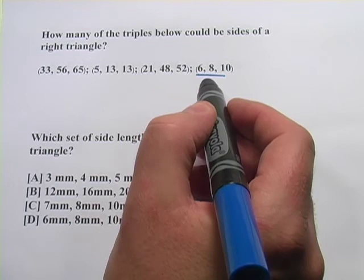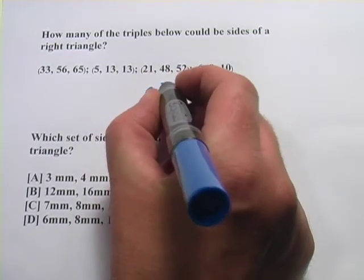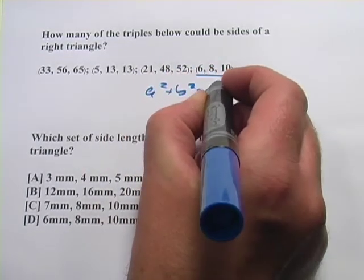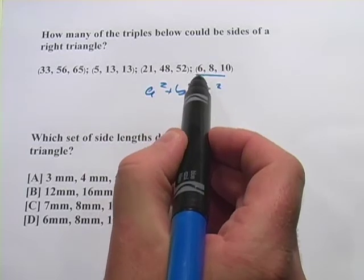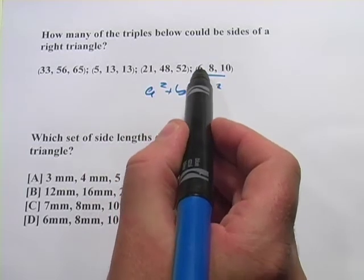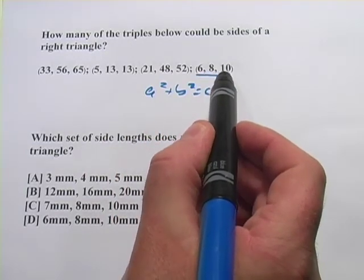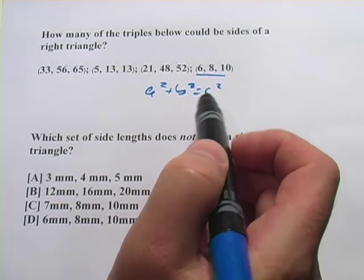If you wanted to double check that, you could use the Pythagorean theorem, a squared plus b squared equals c squared. 6 squared is 36, 8 squared is 64. That adds up to 100, which is 10 squared. So that one definitely fits.